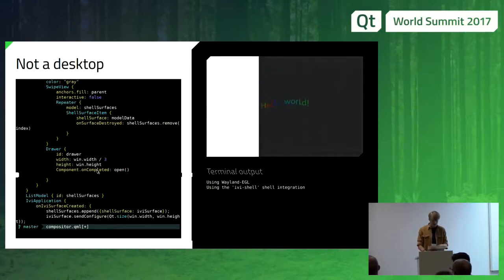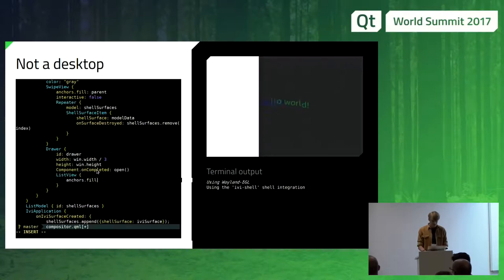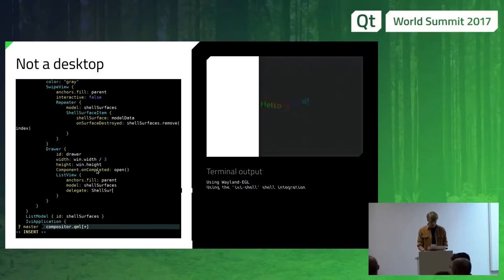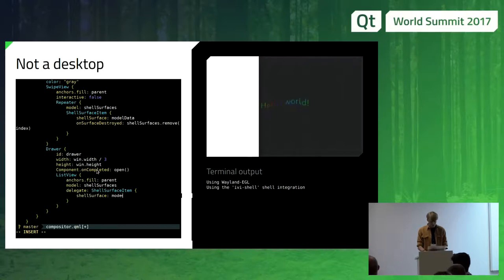What we'll do is add a list view of shell surface items. The model will be shell_surfaces, and we set the delegate to be a shell surface item, setting the shell surface to the model data. We don't need a surface destroyed handler here because it's already handled in the other item.